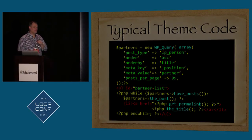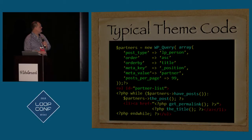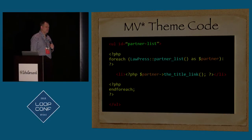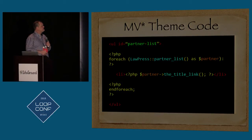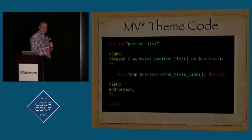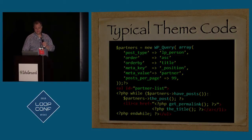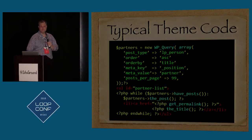I'm going to talk about typical theme code — you've probably seen code like this. You've got your query, and in this particular case we're listing partners as a sample example, doing get_permalink and the title to list them off. What would MV* code look like instead? We would simply have a list and then a title link. The theme code gets much simpler, and the code from the prior slide gets moved into your model, where you can use it wherever you need throughout your application.